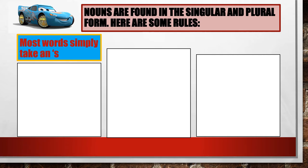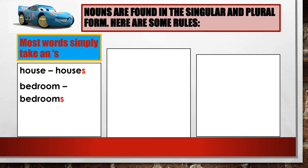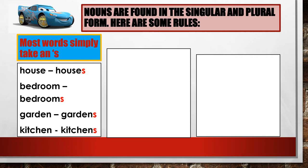Most words simply take an S. Example: one house, many houses. One bedroom, many bedrooms. One garden, many gardens. One kitchen, many kitchens.